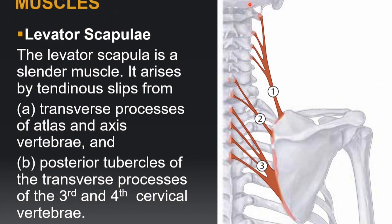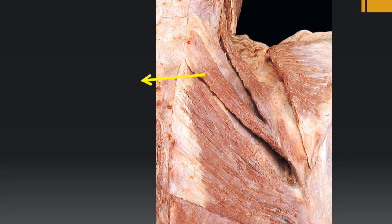Now coming to the deep posterior axial appendicular muscles. We have discussed two superficial muscles — trapezius and latissimus dorsi. Underneath these are three more muscles: levator scapulae, rhomboid minor, and rhomboid major. Levator scapulae is a slender muscle that arises by tendinous slips from the transverse process of the atlas, the transverse process of the axis, and the posterior tubercles of the transverse processes of C3 and C4. It runs down and laterally to insert into the medial border of the scapula, above the spine of the scapula and below the superior angle.